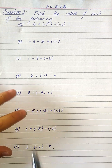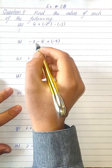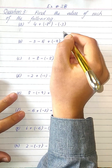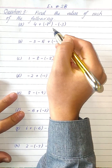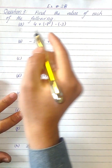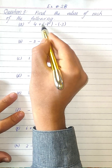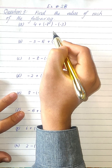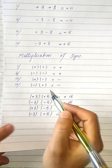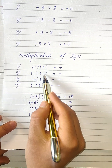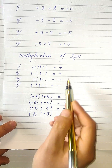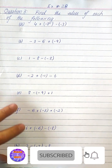Exercise 2b question number 3: find the value of each of the following parts. If you are not familiar with the multiplication of signs or adding or subtracting two values, you can watch exercise 2b question number one. Here, we are going to use four sign rules: plus times plus is plus, minus times minus is plus, plus times minus is minus, and minus times plus is minus.